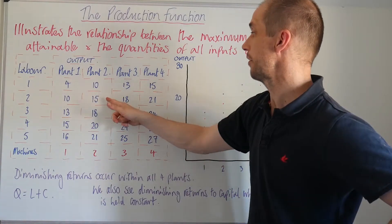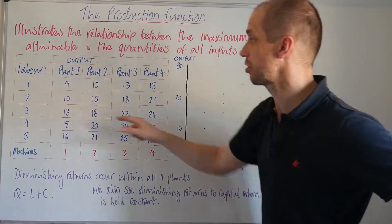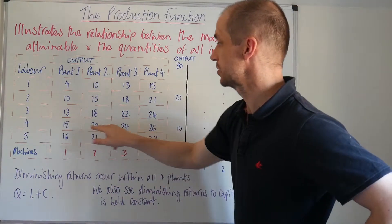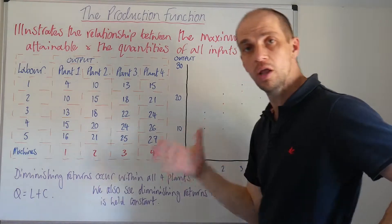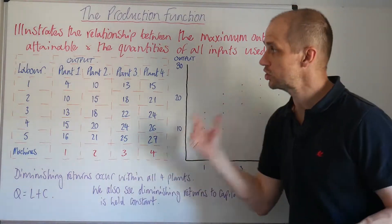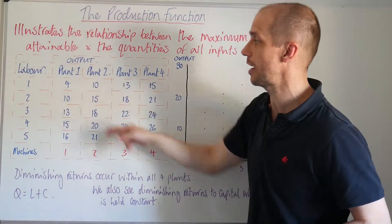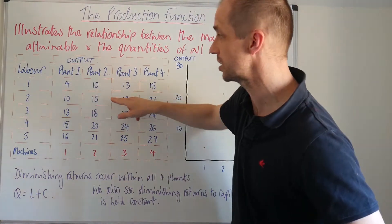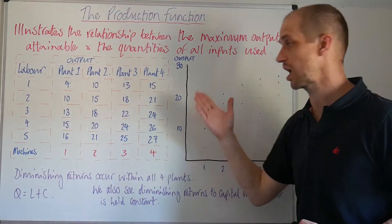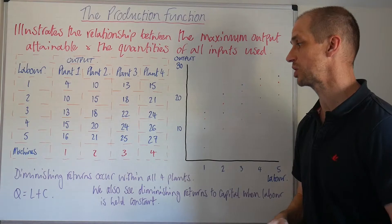And we see this throughout, so ten to fifteen five, fifteen to eighteen, well that's down to three, once again we've got five here down to four, once again five down to four. So we can see those diminishing marginal returns not just to labor as we go vertically down, but we can see horizontally we also see the diminishing marginal returns to capital, to that machinery utilized here.